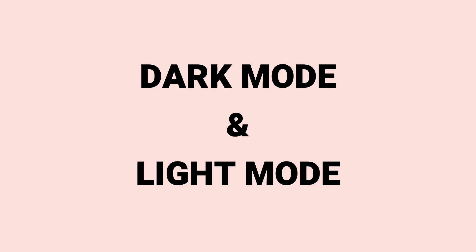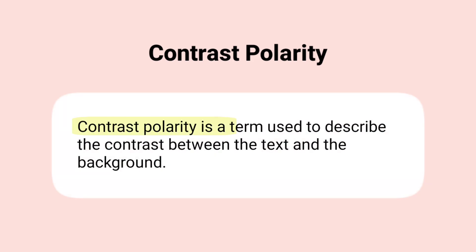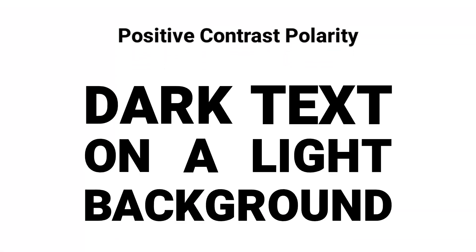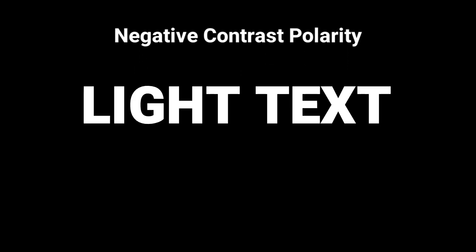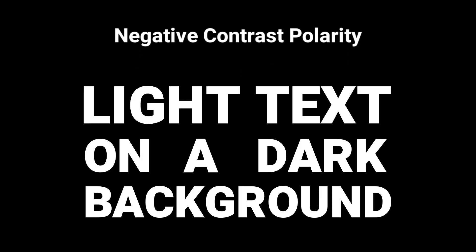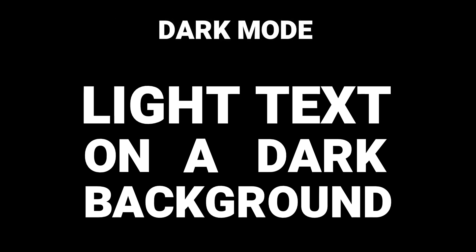First, you want to know about contrast polarity. Contrast polarity is a term used to describe the contrast between the text and the background. Positive contrast polarity refers to dark text on a light background — this is light mode. And negative contrast polarity refers to light text on a dark background — this is dark mode.